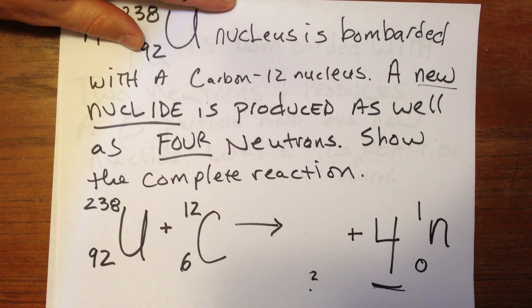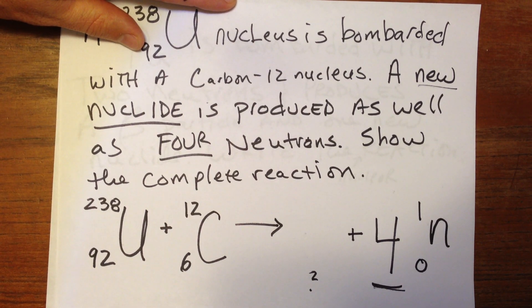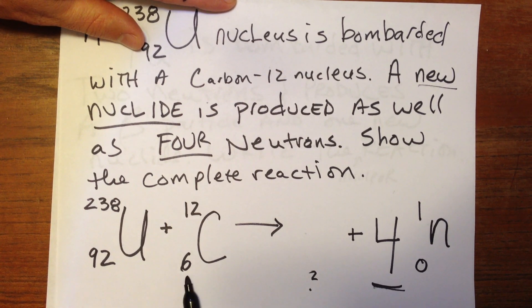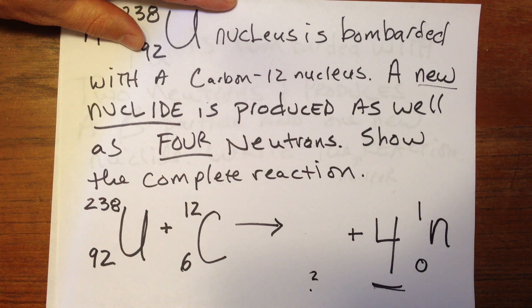And so now we've got to figure out how do these add up? How do these all add up to equal the same on each side? So let's start with the bottom. That's a little bit easier. Before the arrow on the bottom, we have, for the atomic numbers, we have 92 and 6. So that's 98. So on the right, they have to equal 98.